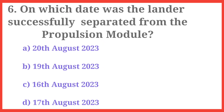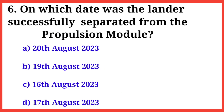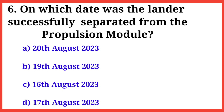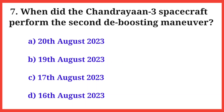Q6. On which date was the lander successfully separated from the propulsion module? The right answer is option D: 17th August 2023.